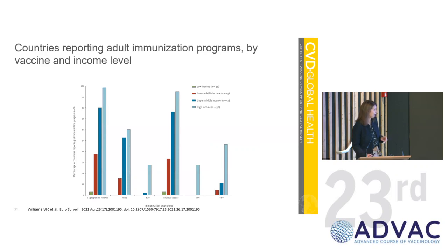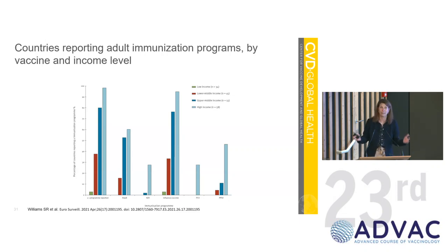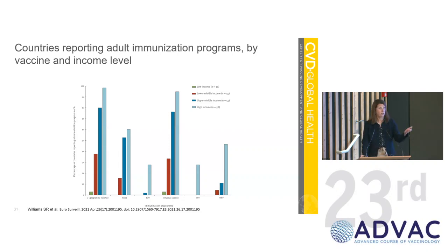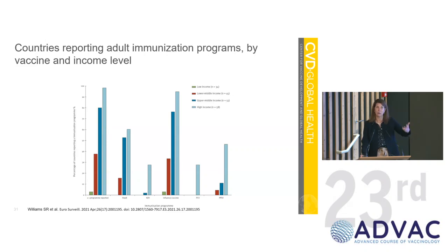We published a study just before the pandemic asking: how are we going to reach adults with COVID-19 vaccines when most adult immunization programs, shown in blue, are in high-income and upper-middle-income countries, with very few in lower-income countries? We did pretty well with COVID. Now we need to think in reverse: can we utilize the programs created for adults during COVID to now deliver other vaccines? That's another part of the integration idea.